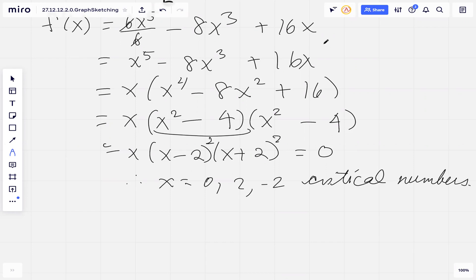Now we're going to take a look at the second derivative. It's easier to take the second derivative from this stage. We take the derivative of x to the power 5 minus 8x cubed plus 16x, and that equals 5x to the power 4 minus 24x squared plus 16.